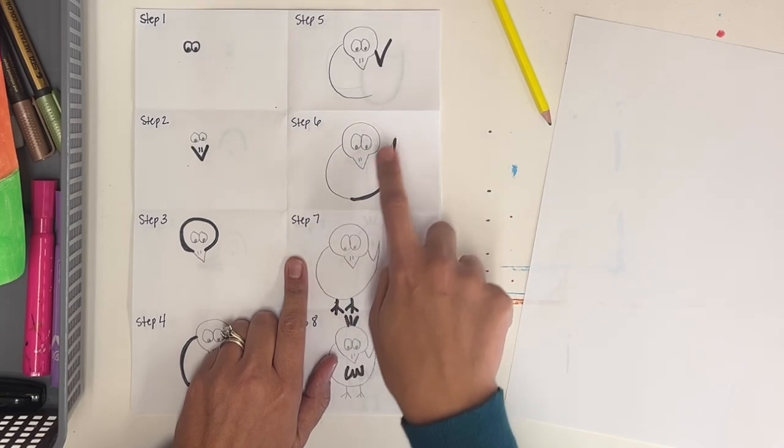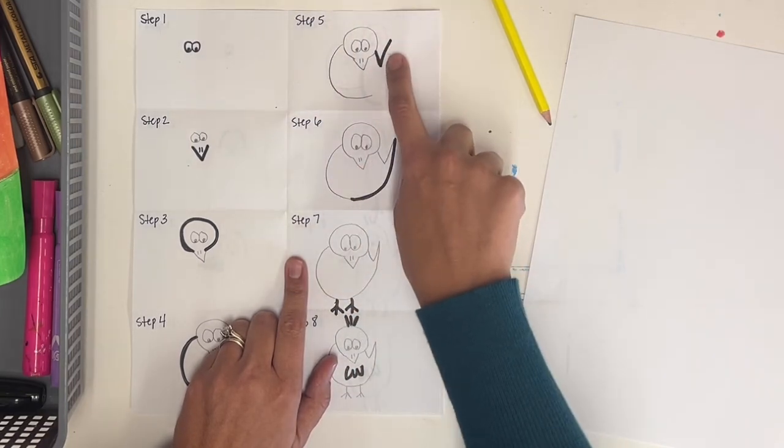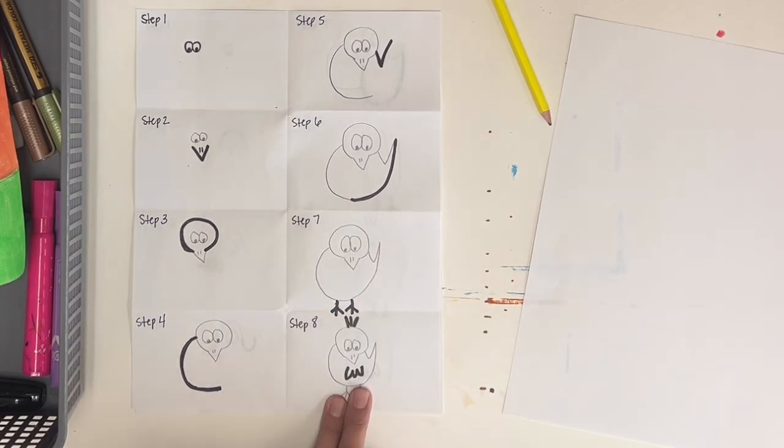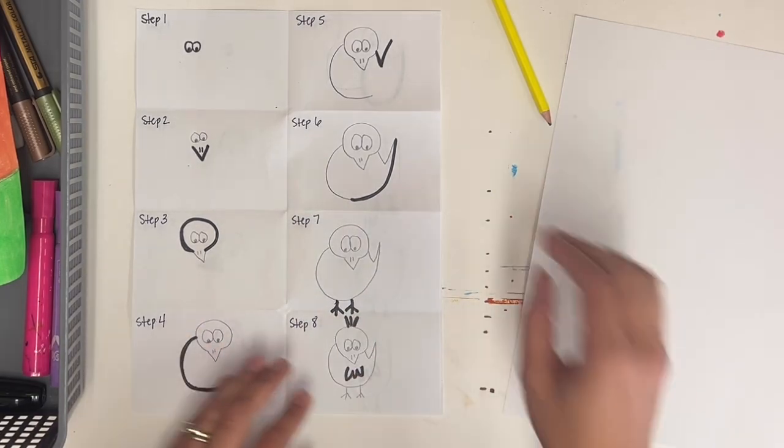Step six, you connect the C and the V. So here's the C, and here's the V. You draw a line that connects that. Step seven, I drew little bird feet. Step eight, I drew little hair and a little wing. So watch me draw this.